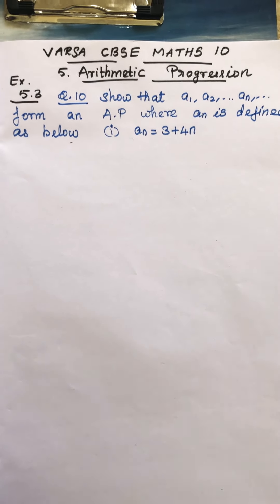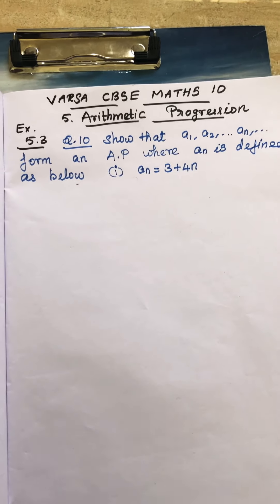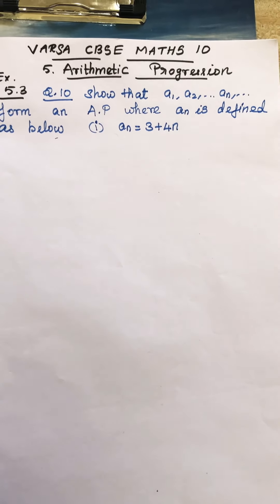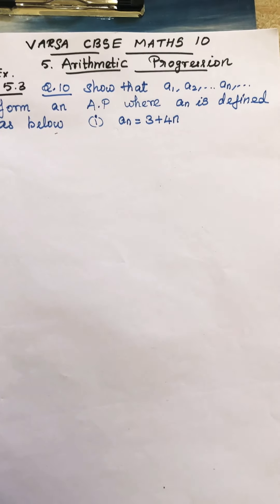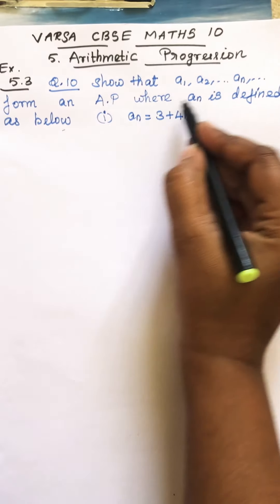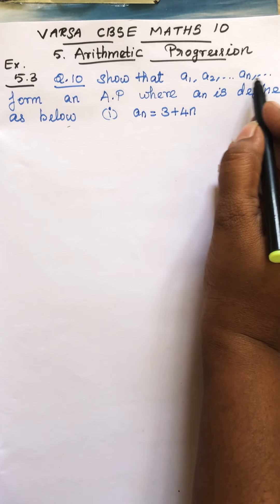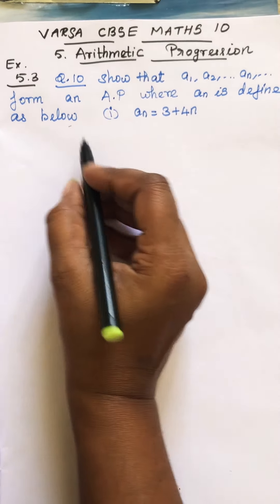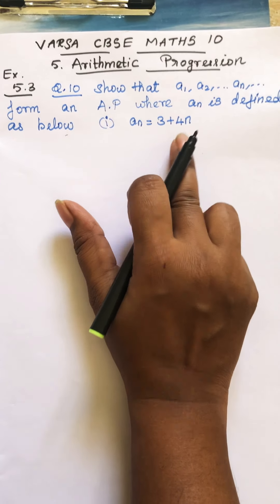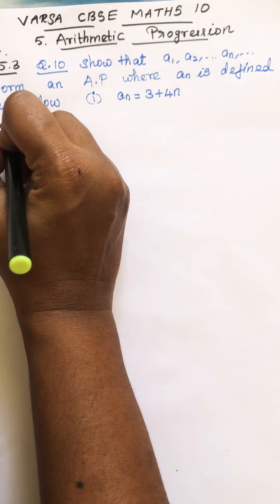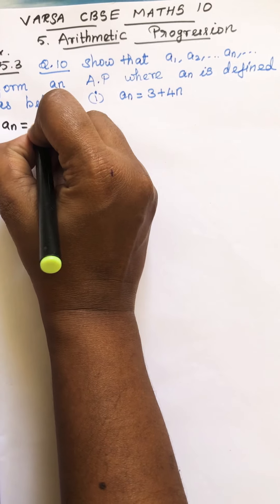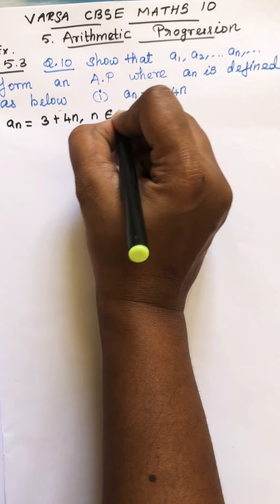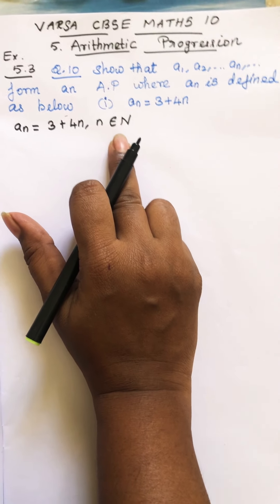You just try to do each and every sum with understanding. That is more important. Understanding the concept is very much important. So let us go to the sum. Show that a1, a2, and an form an AP where an is defined as below. So you have a general term an = 3 + 4n, where n is in natural numbers.